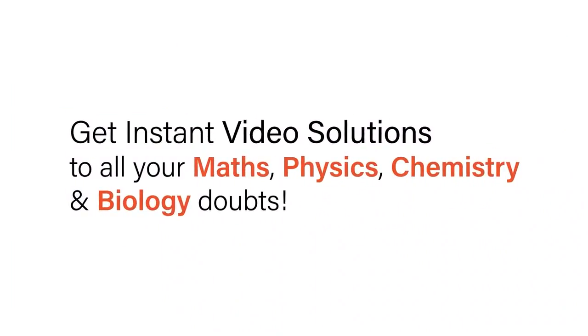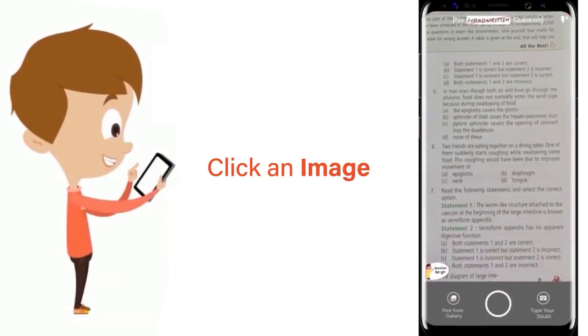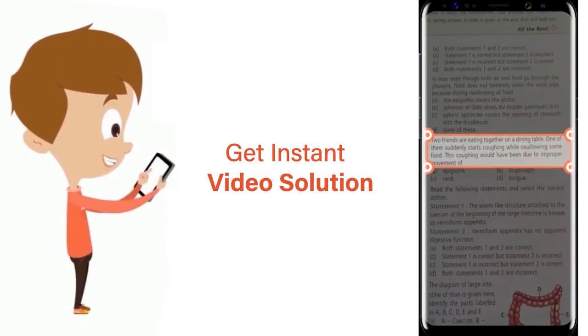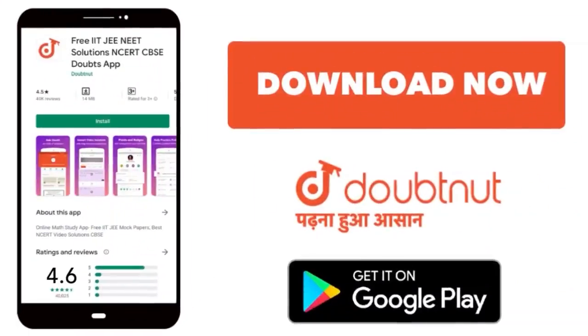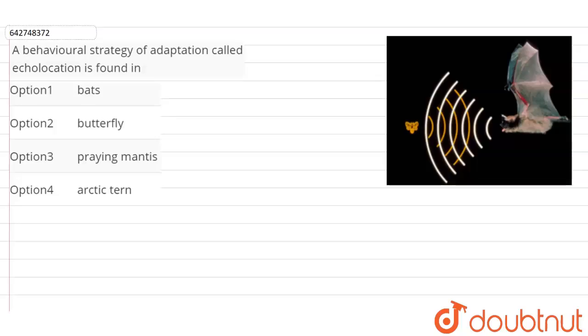With DoubtNet, get instant video solutions to all your math, physics, chemistry, and biology doubts. Just click the image of the question, crop the question, and get instant video solution. Download DoubtNet app today. In this question, we have to select the animal from the given options.